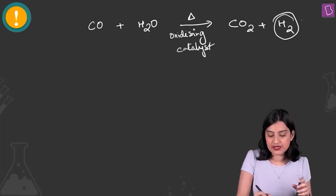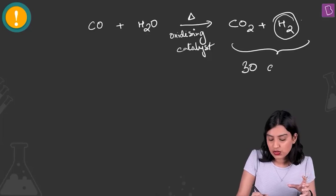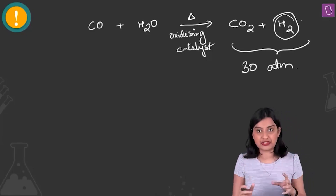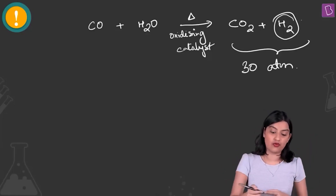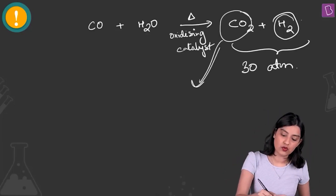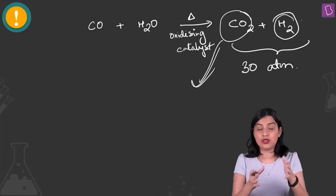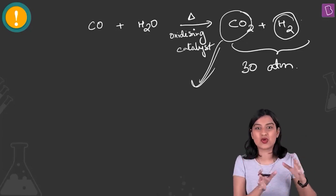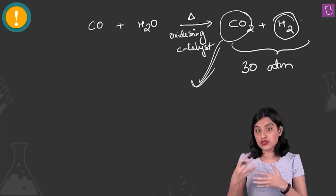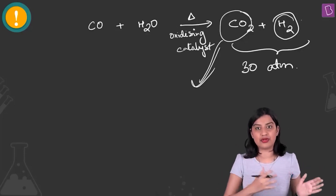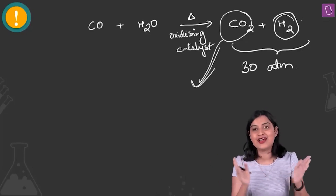This mixture is compressed at 230 atmospheres pressure. Since CO₂ is soluble in water — like carbonated drinks — the carbon dioxide dissolves into water, while H₂, which does not dissolve, is collected on top of the water. That gives you industrial-grade hydrogen.